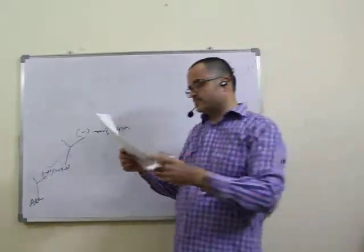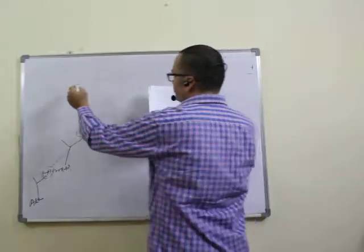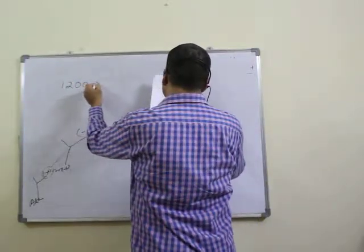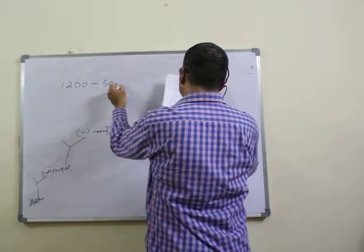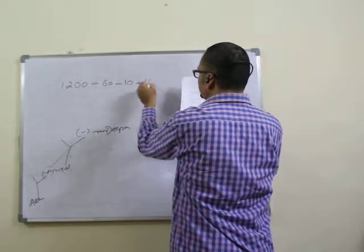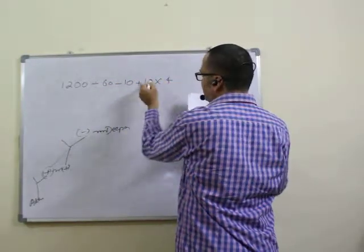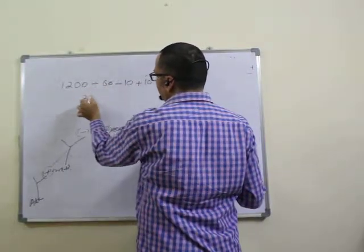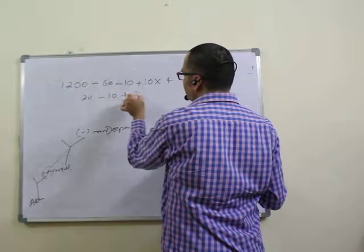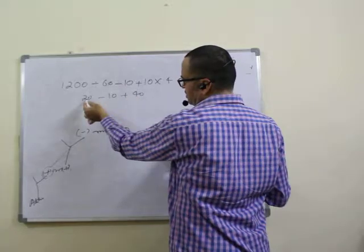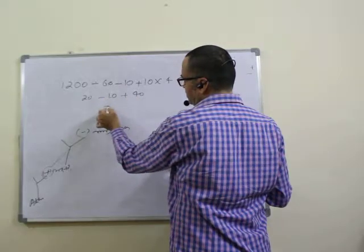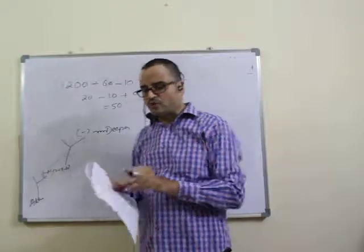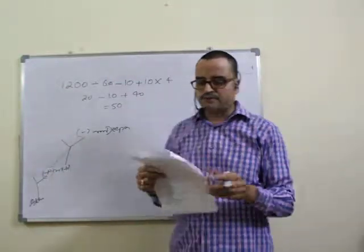Question seventeen is based on symbols and notations. The expression: 1200 divided by 60 minus 10 plus 10 times 4. Solving: 1200 divided by 60 is 20; minus 10 is 10; plus 40 is 50; wait — 40 minus 10 gives 30... the result is 50. Seventeenth question, first option.